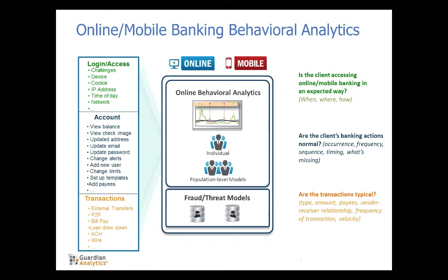Utilizing behavioral analytics allows Guardian Analytics and a financial institution the ability to identify when significant changes in behavior occur, which typically are indicators of fraud and often times precursors to actual fraudulent transactions. Guardian Analytics does this by asking a few general questions. First, we assess if the account holder is accessing online and mobile banking in the expected way: what device are they using, when are they accessing online banking, and what are the behavior patterns specific to that account holder. Then, once someone accesses online banking, we track what actions and activities they do during an online banking session.